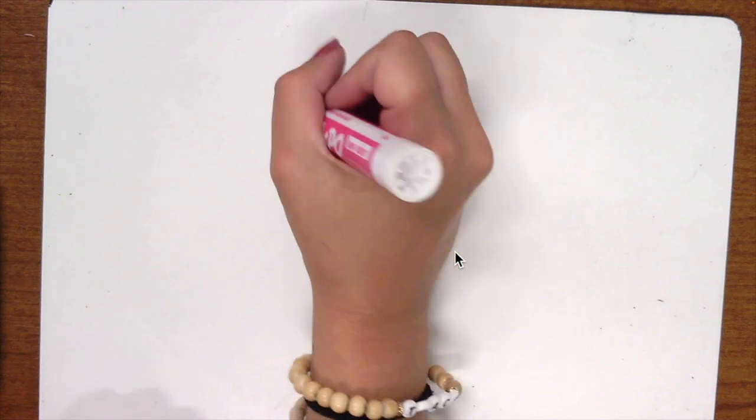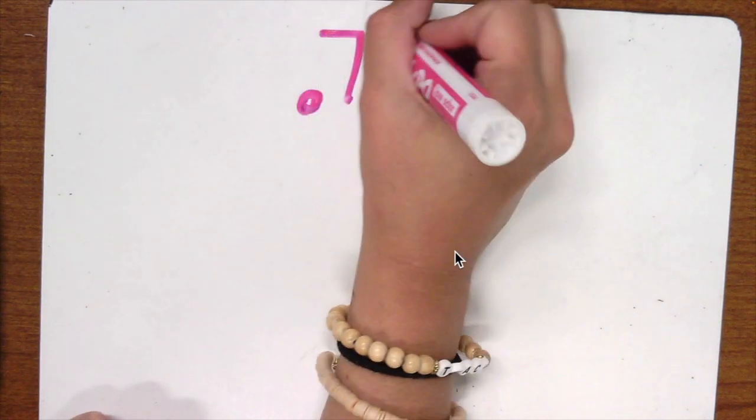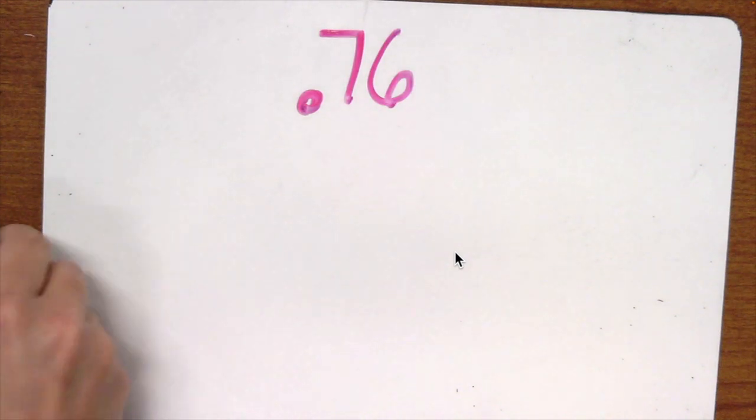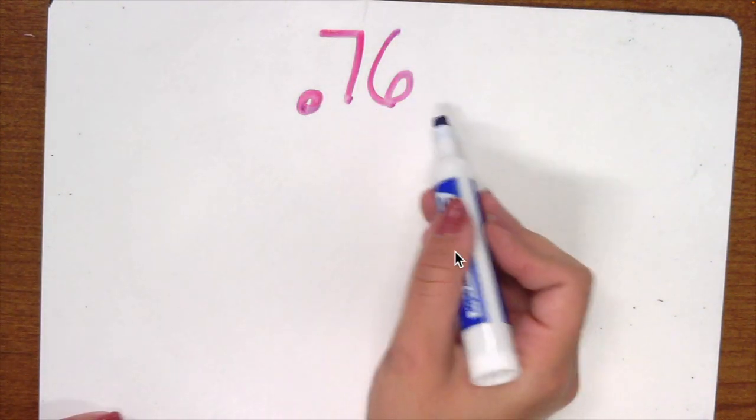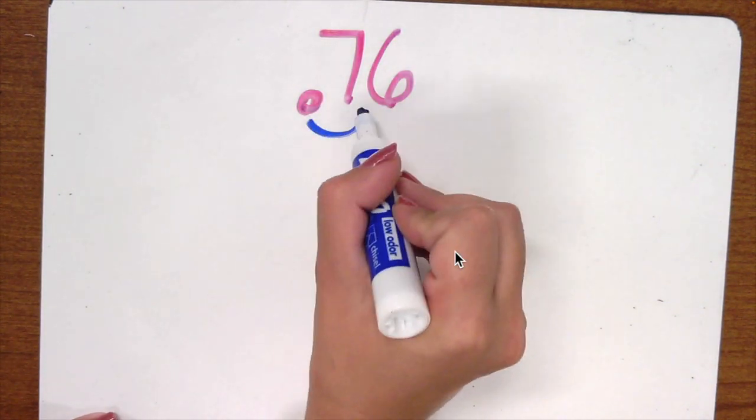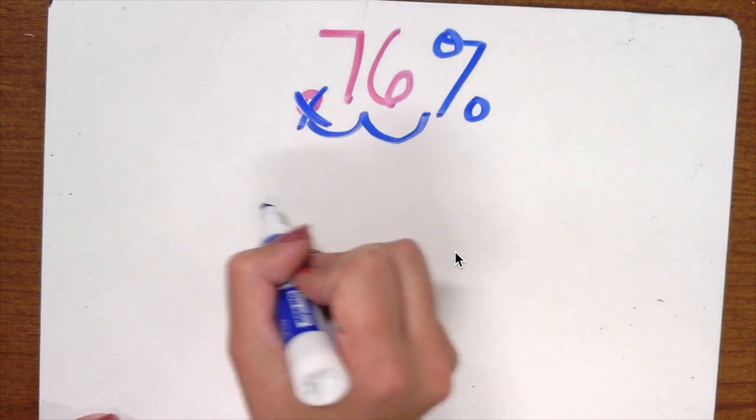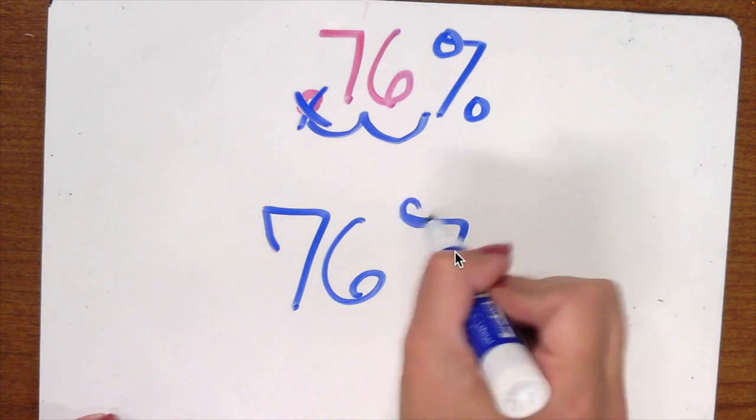Now let's go the reverse. Let's say I have 0.76 and I want to change that to a percent. So I'm going to start at my decimal and percents are in the back so that's where I'm going. So I jump one, I jump two, add my percent, get rid of my decimal. So I have 76 percent.